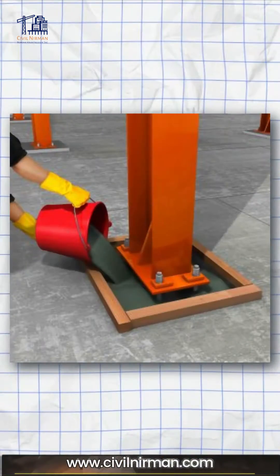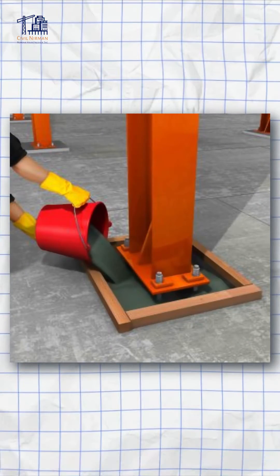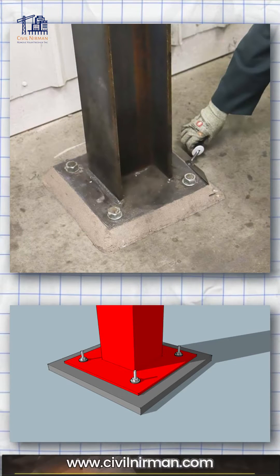ACI defines grout as a mixture of cementitious material and water, with or without aggregate, proportioned to produce a pourable consistency without segregation of the constituents. Now, why is it required? In the installation of base plate connections, grout is used for different reasons. One important reason is filling the void spaces in the concrete surface for increasing the friction between the base plate and concrete foundation.